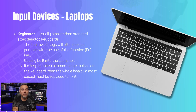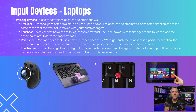Keyboards for laptops are typically smaller compared to standard desktop keyboards. The top row of keys on laptop keyboards often serves dual purposes when used with the function keys, and they are usually integrated into the clamshell design of the laptop. In case of a broken key or spillage, the entire keyboard unit usually needs to be replaced. Pointing devices used to control the mouse in the GUI include the trackball, which functions like an upside-down mouse; the touchpad, where users move their fingers to control the on-screen pointer; the point stick, a small rubber tip stick for directional control integrated into the keyboard; and the touchscreen, which allows direct screen interaction including mouse clicks and pinch-to-zoom gestures.